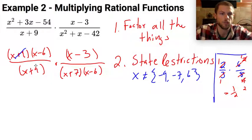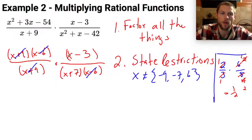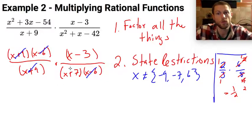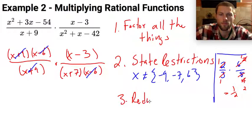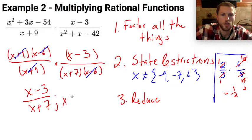I can reduce by taking an x plus 9 out of the numerator and the denominator over here. And I can take an x minus 6 out of this numerator and an x minus 6 out of this denominator. Now before you're tempted to reduce these x's here, remember those are not factors. The factor is x minus 3, that entire thing. And this factor is x plus 7. So what do I have left? Once I reduce, I have x minus 3 all over x plus 7. And now let's state the restrictions. x cannot equal a set of numbers negative 9, negative 7, and 6. And there's my solution.